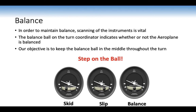Balance: scanning of instruments is vital using the ALAP cycle. The balance ball and attitude indicator show whether the aeroplane is in balance. In this lesson it becomes even more important to prevent a skid or slip. Keep the balance ball in the middle throughout the turn — step on the ball. If you're skidding, apply a little left rudder; if slipping, a little right rudder — when turning right, maintain balance throughout.